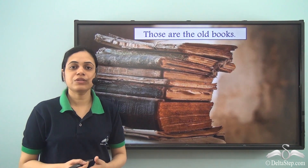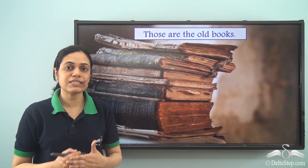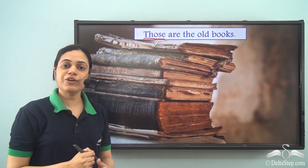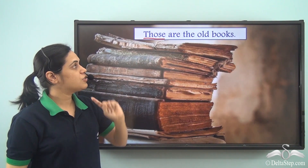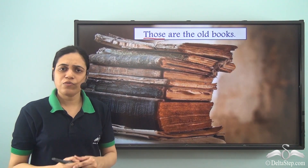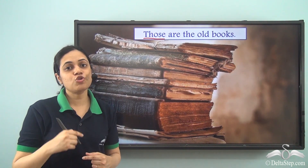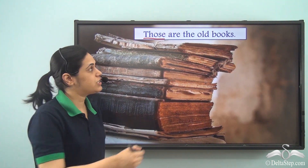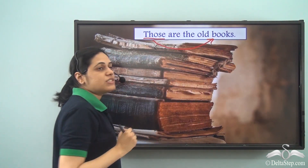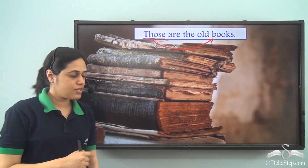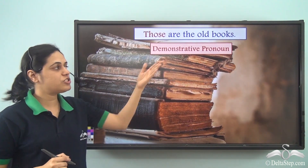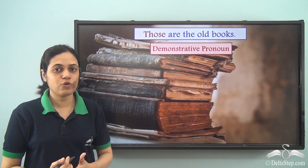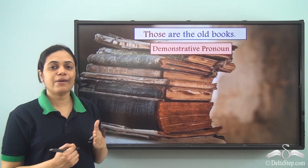'Those are the old books.' What is the pronoun and what is its type? The word 'those' is a pronoun. It is used to point towards something — it is pointing towards or referring to the books. So it is a demonstrative pronoun. We are pinpointing which books are the old books, so 'those' is a demonstrative pronoun.